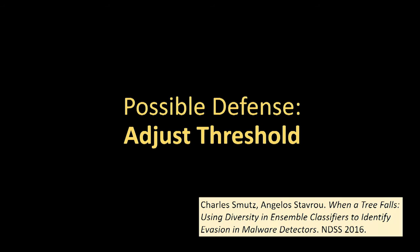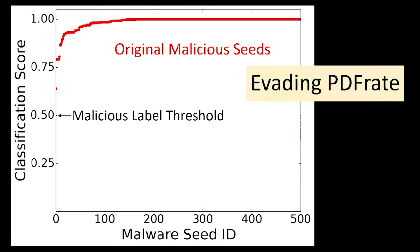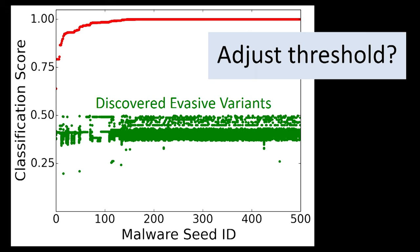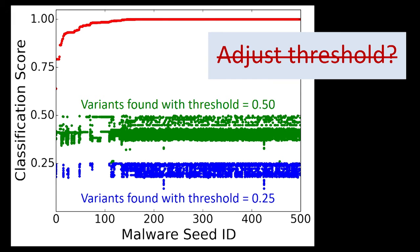Are there any defenses? The simple ones don't seem to work. One idea is to adjust the threshold: the original seeds are all rated very close to 1 (fully malicious) and the threshold is set at 0.5. Most evasive variants end up close to 0.5, so maybe raising the threshold would help. But when you vary it, we can run the evasion process and find variants at a lower threshold — at some point everything gets classified as benign, which isn't useful. Results for HiDOS are very similar.